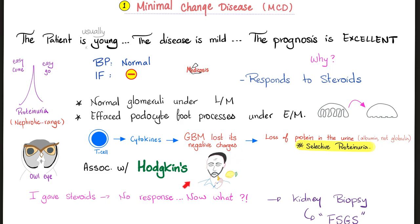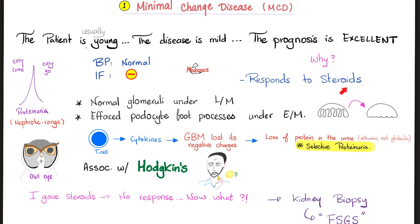This disease can be secondary to Hodgkin's lymphoma, which tells you that many patients of minimal change disease are adults, not necessarily children. Here's the owl eye to remember the Reed-Sternberg cell. Clinically, the baby was fine, and then suddenly there is nephrotic-range proteinuria — more than 3.5 grams per day. You give steroids and everything goes back to normal. Easy come, easy go. Blood pressure is normal because this is purely nephrotic, not nephritic. Immunofluorescence is negative because no antibodies are involved. Why do steroids help? Because steroids inhibit interleukin-1-beta so that lymphocytes cannot communicate with each other and therefore release fewer cytokines.